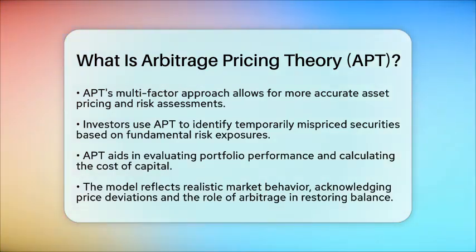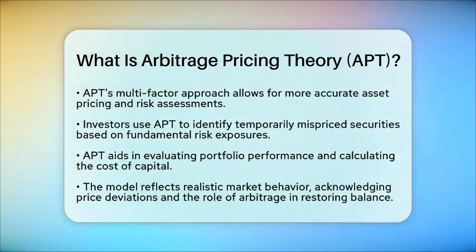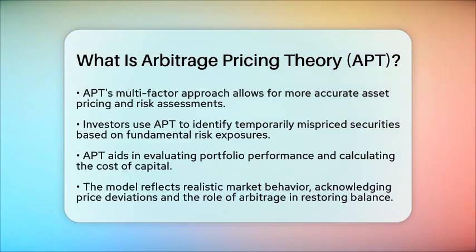Arbitrage pricing theory connects an asset's expected return to various macroeconomic risk factors through a linear relationship. This model allows investors to identify mispriced securities and evaluate risk more thoroughly compared to single-factor models. It reflects a realistic view of market behavior, acknowledging that prices can deviate from fair value and that arbitrage forces will eventually restore balance.